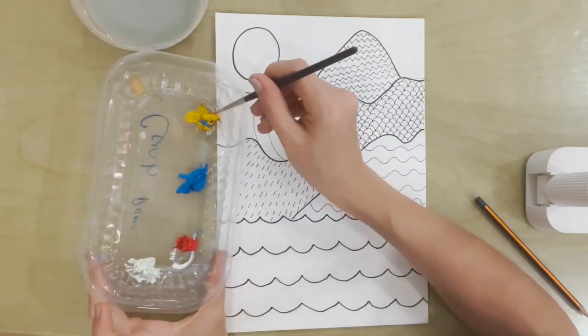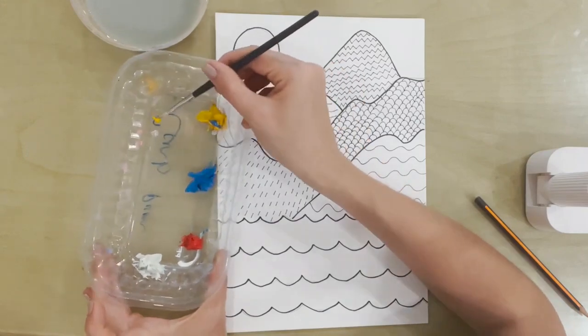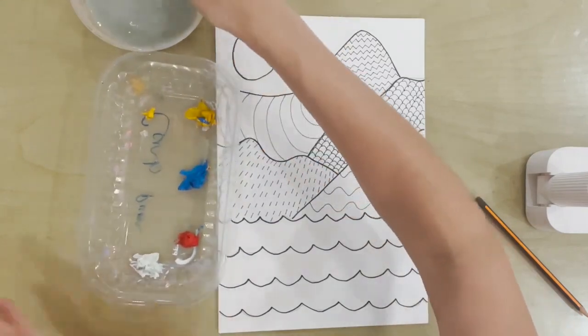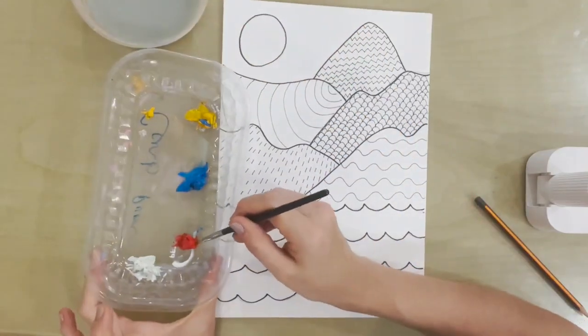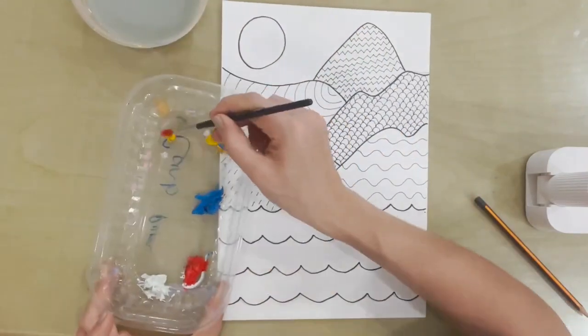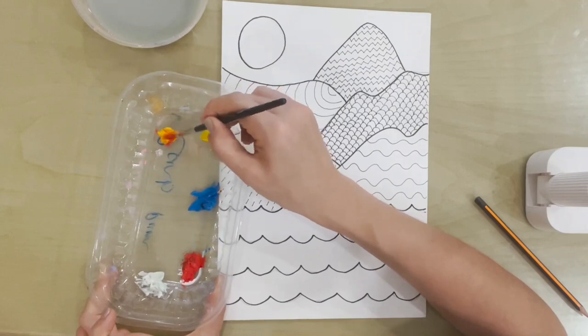So I'm going to begin by mixing some orange, which means I need to take some yellow, clean that brush, dry it, take some red. And then I can mix those together to make orange.